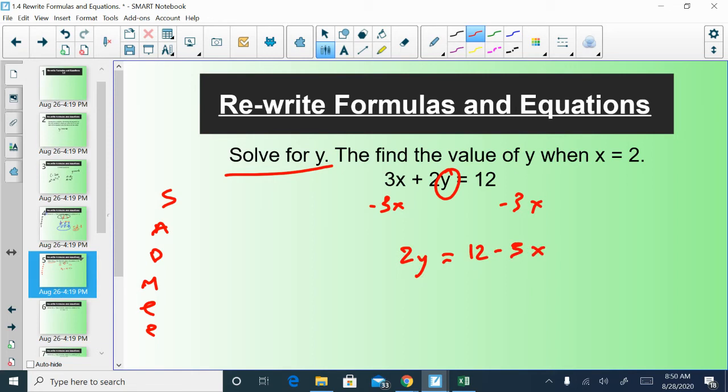And now y is being multiplied by 2. And the way to undo a multiply 2 would be to divide by 2. If I divide by 2 on one side, I have to divide by 2 on every side. Multiply by 2 and divide by 2 cancel. We have y is equal to. We know what 12 over 2 is. We do need to simplify this in order to get full credit. 6 minus 3 halves.